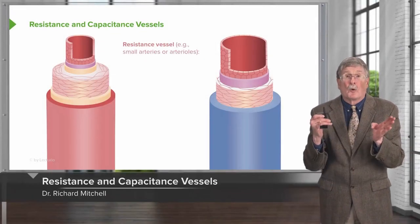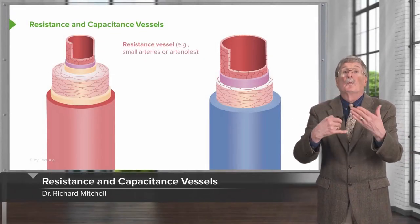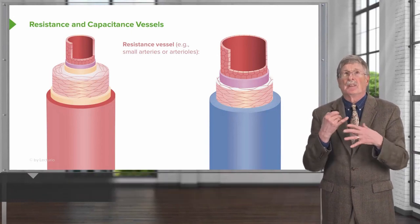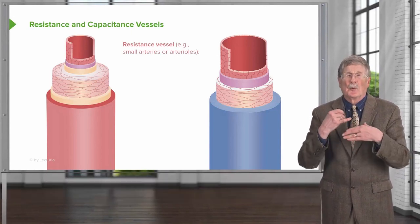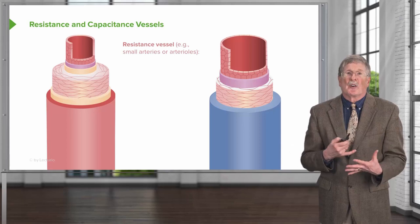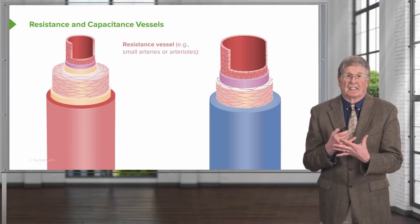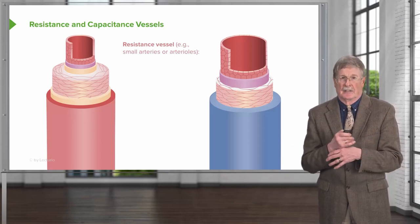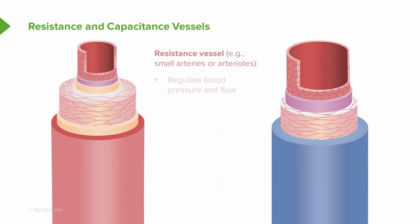We're just kind of repeating now, so it is a useful review. Arteries are your resistance vessels — the small arteries and arterioles. They regulate arterial blood pressure and blood flow within the organs. They are highly responsive to hormonal and nervous stimuli. There's also hormonal input, and we'll talk more about things like the renin-angiotensin system shortly.